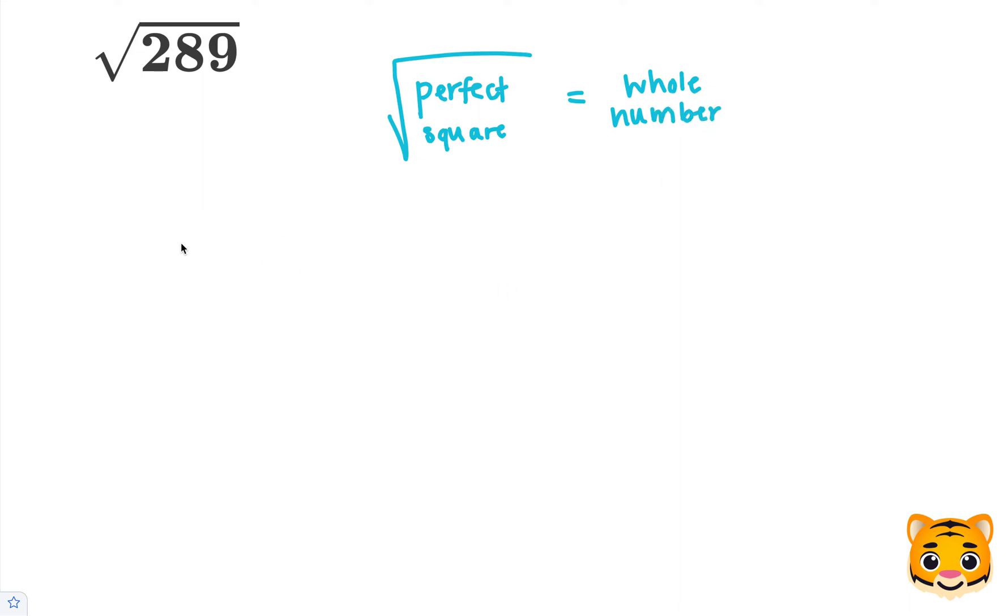Examples of perfect squares include 4 as that's 2 squared, or 100 as that's 10 squared.